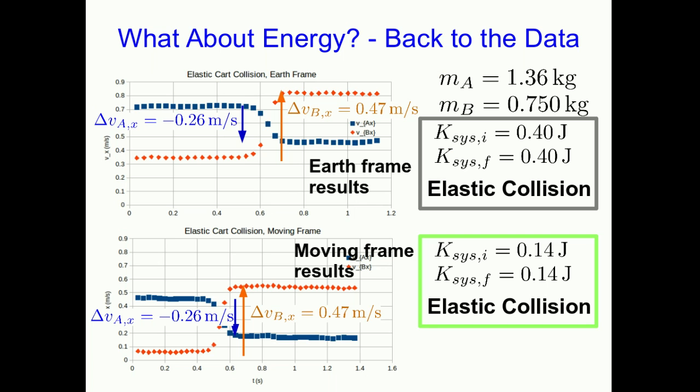Later on in lecture two of the principle of relativity unit I showed you this data. If you have only watched the momentum unit and don't know what I mean by earth frame and moving frame don't worry, just focus on the earth frame. In that video I claimed that there was good agreement between the initial and final kinetic energy of the system, it was 0.4 joules.